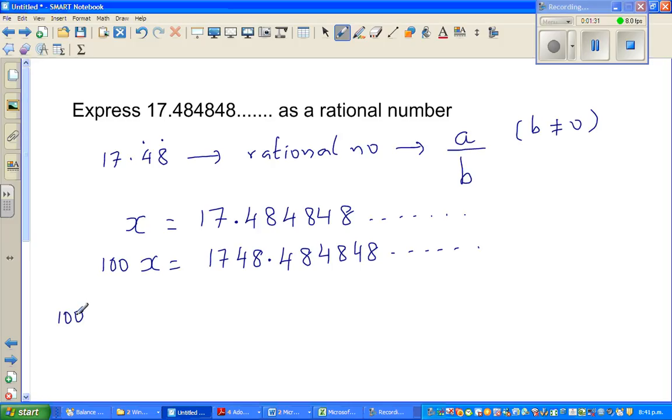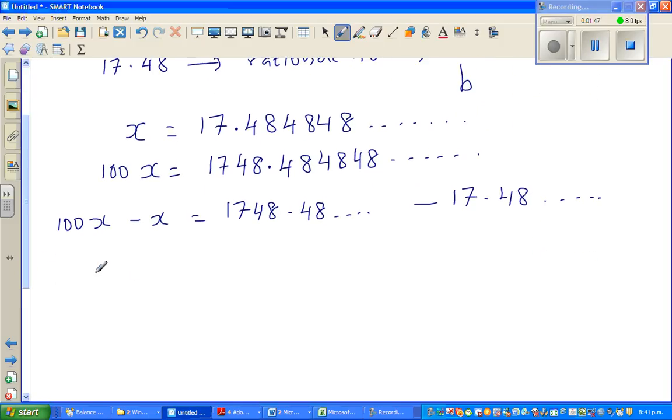So if you do 100X minus X, it's the same as writing 1748.4848 minus 17.4848. So if you take away, this is 99X is equal to, so let me write this, 1748.4848 minus 17.4848. So this becomes zero and this is one, this is three. So 1731 is nothing but 99X.